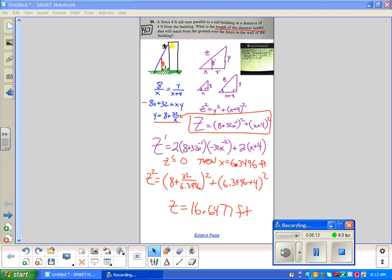I get 16.6... That's 277. And then you get the square root of that. 16.6477 feet ladder.